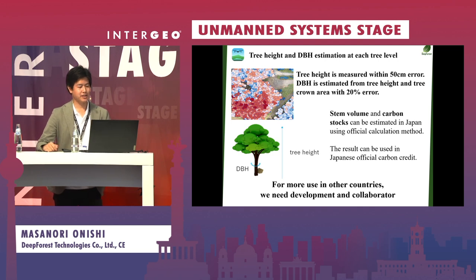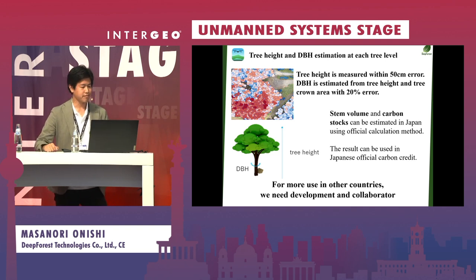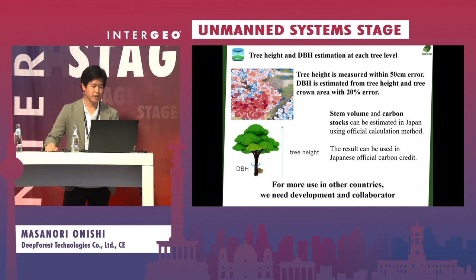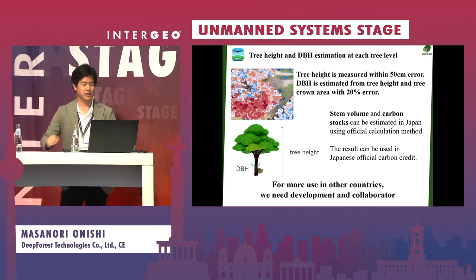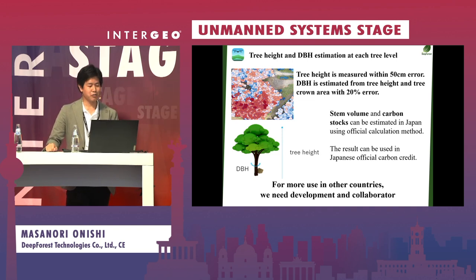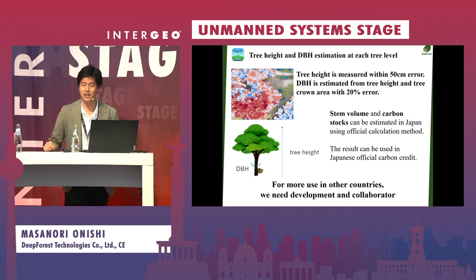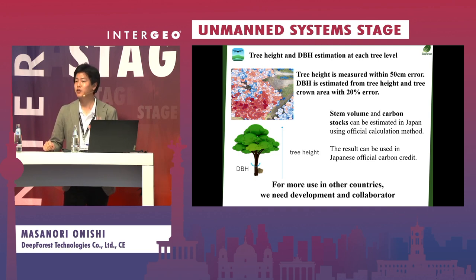Tree height and DBH estimation can be performed at the individual tree level. Tree height is measured within 50 cm error using a LiDAR drone, and DBH is estimated from tree height and crown area with 20% error. In Japan, from tree height, DBH, and species information, stem volume and carbon stocks can be estimated using official calculation methods, and results can be used in Japanese official carbon credits.